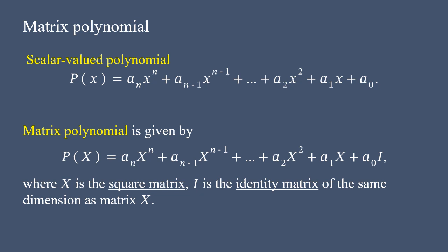Furthermore, a free constant, A0, must be multiplied by the identity matrix, which is of the same size as matrix X.